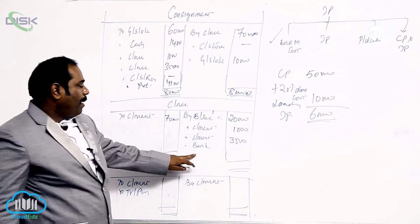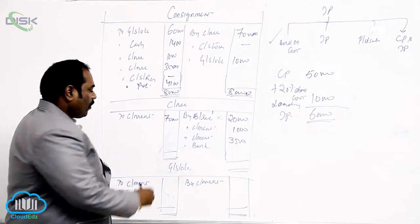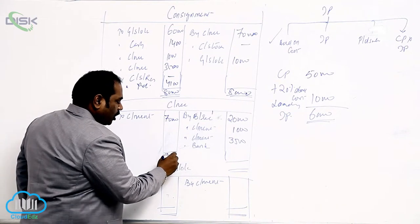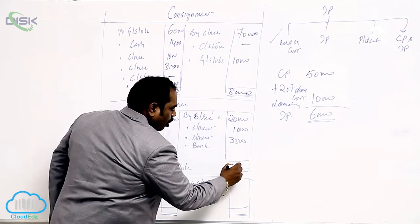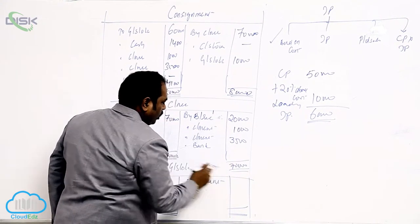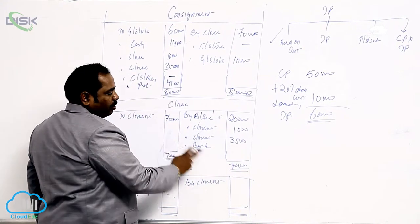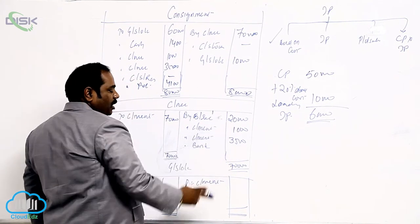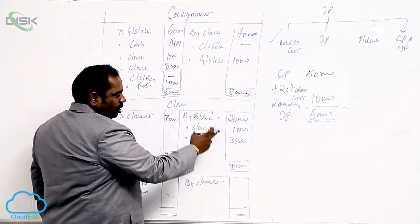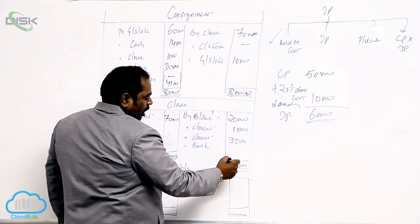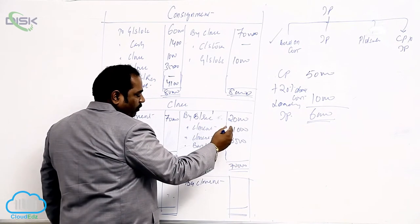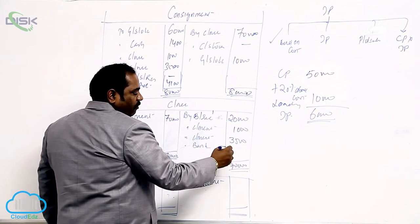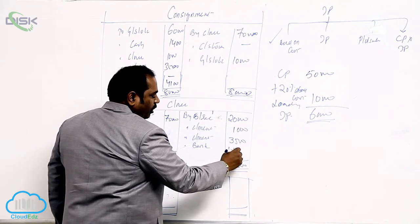By bank is for settlement. To find the settlement amount, close the consignee's account. Whatever balance remains, the consignee has to pay us after adjusting the advance and expenses and commission. He has to still pay: 70,000 minus 20,000 minus 4,500 equals 45,500.